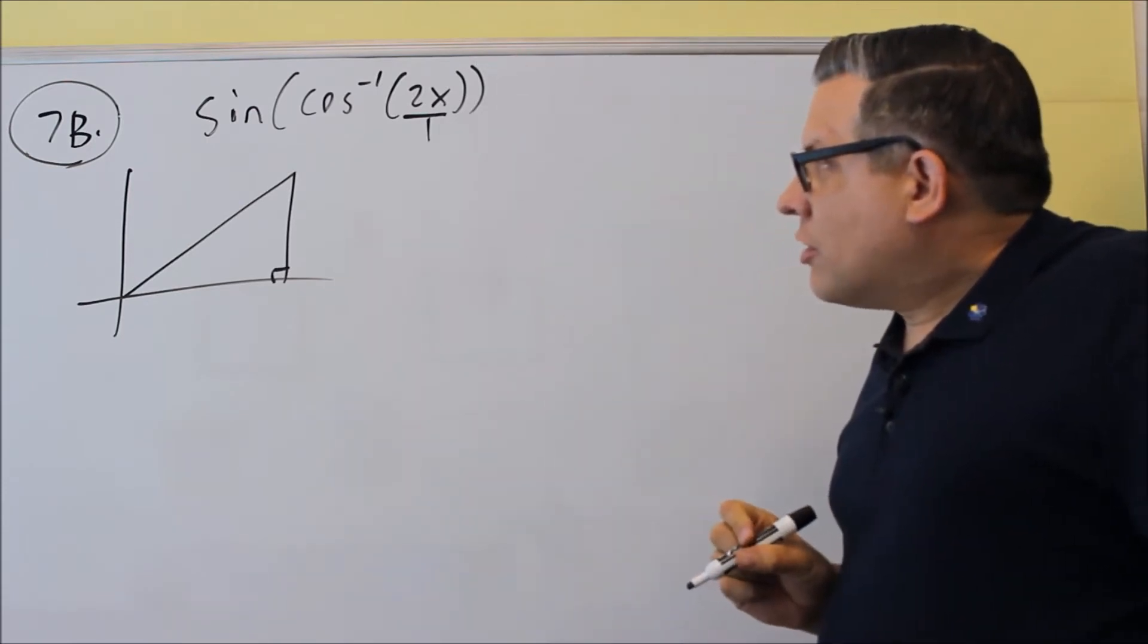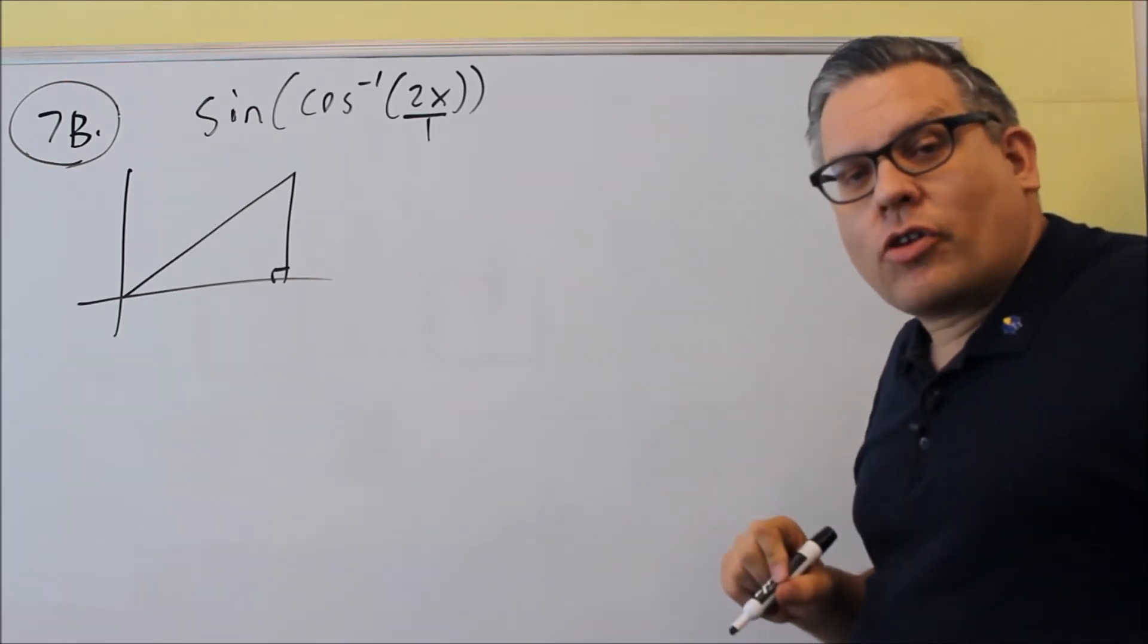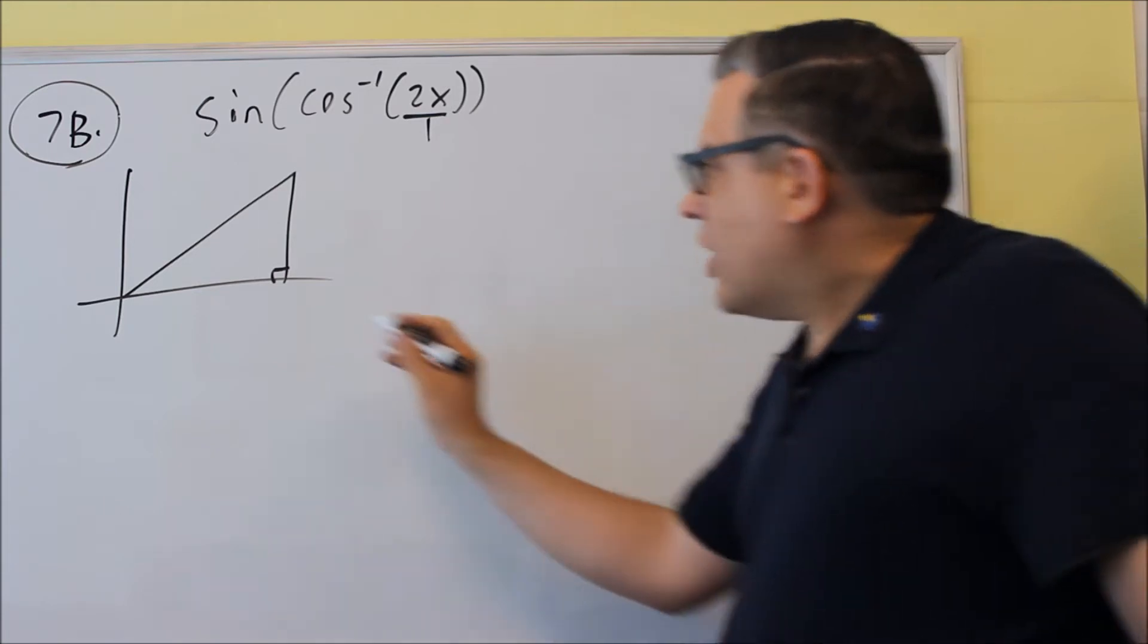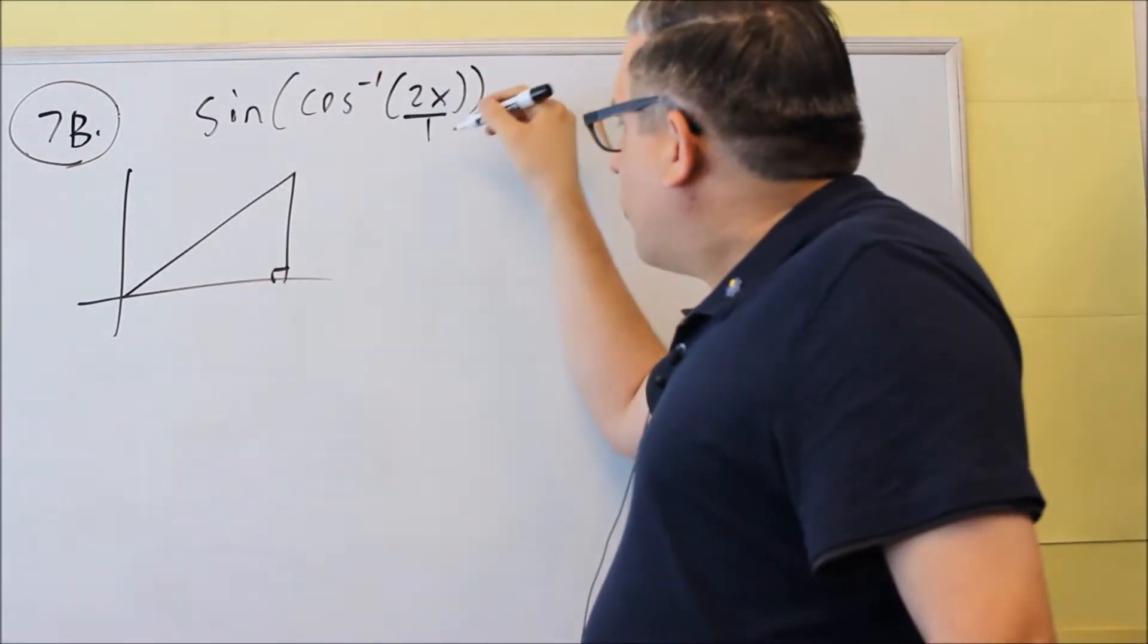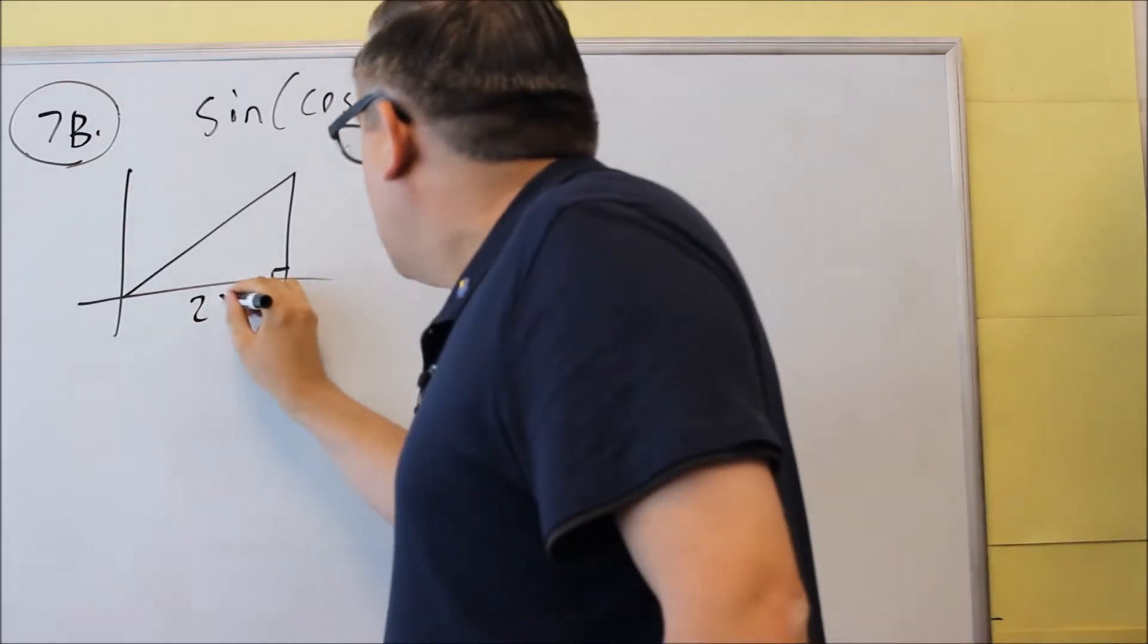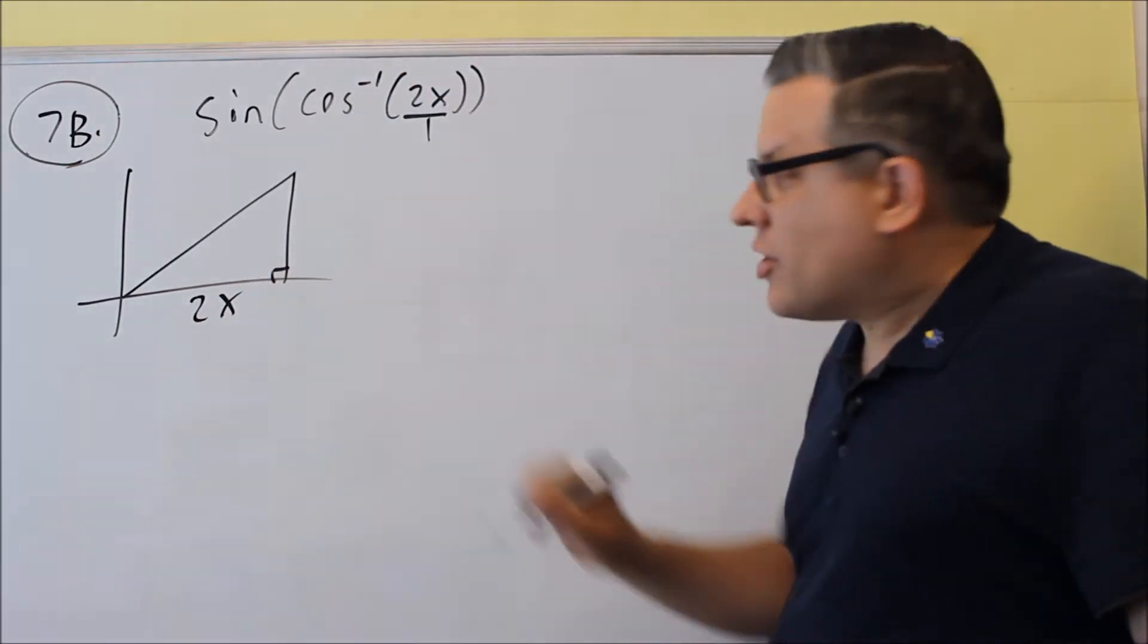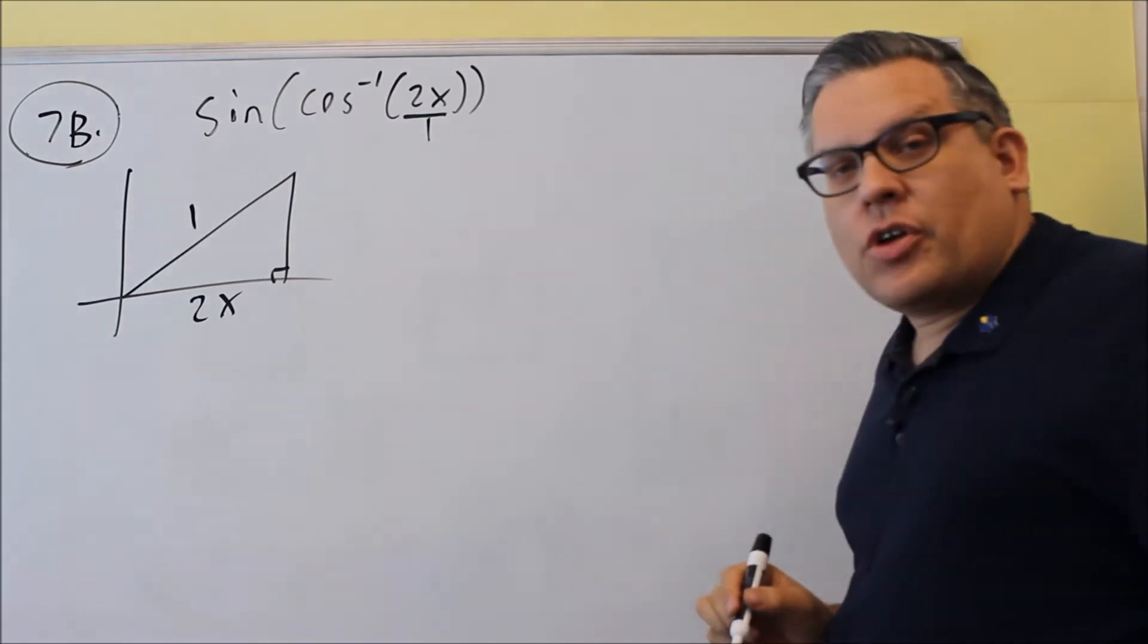Then the definition for cosine is adjacent over hypotenuse. So the adjacent side right here is what we put first. If it's adjacent over hypotenuse, that means that 2x is going to be your adjacent side, and 1 is going to be your hypotenuse.